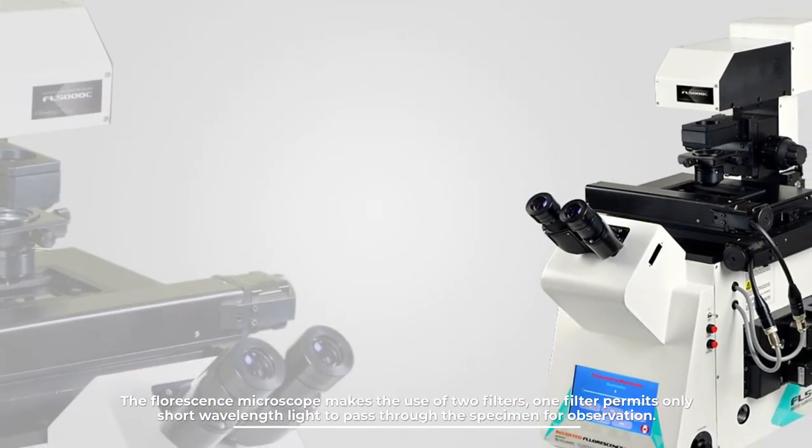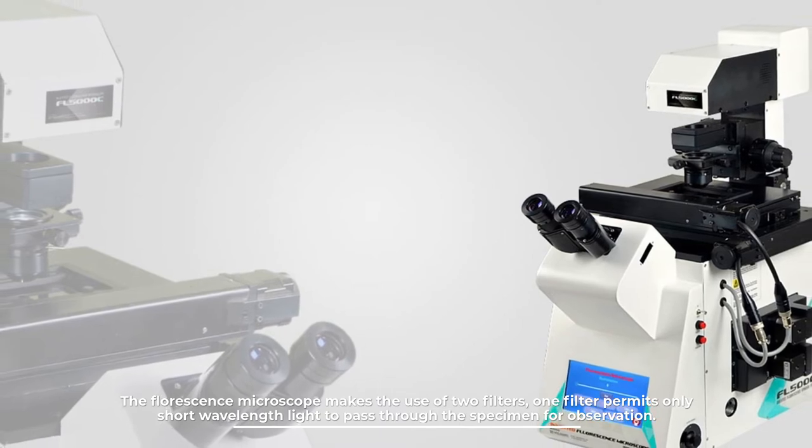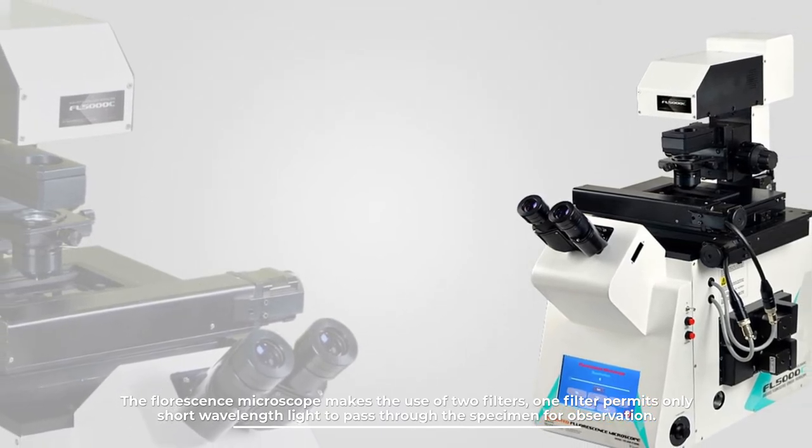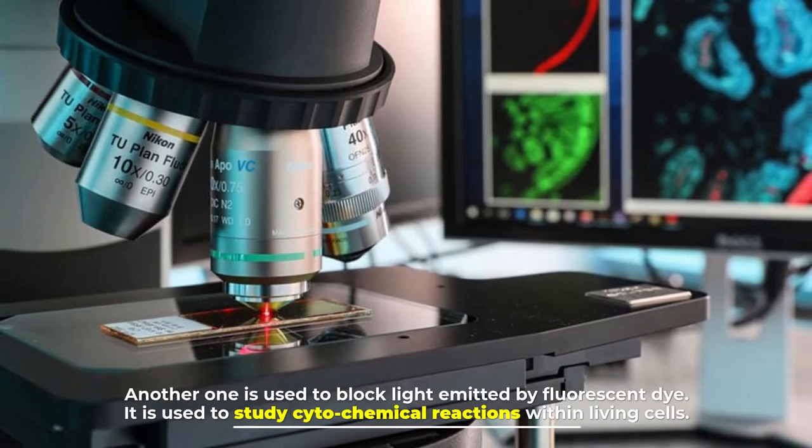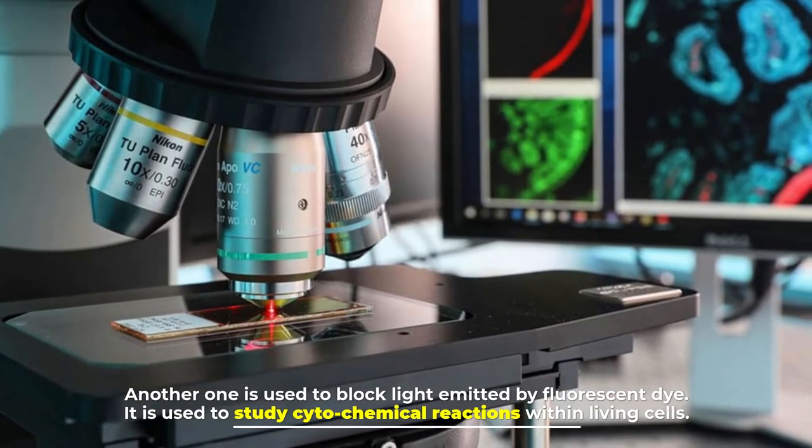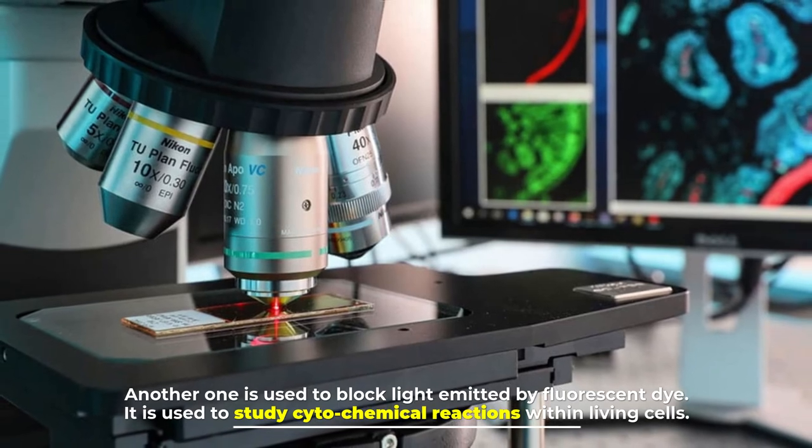The fluorescence microscope makes use of two filters. One filter permits only short wavelength light to pass through the specimen for observation. Another one is used to block light emitted by fluorescent dye. It is used to study cytochemical reactions within living cells.